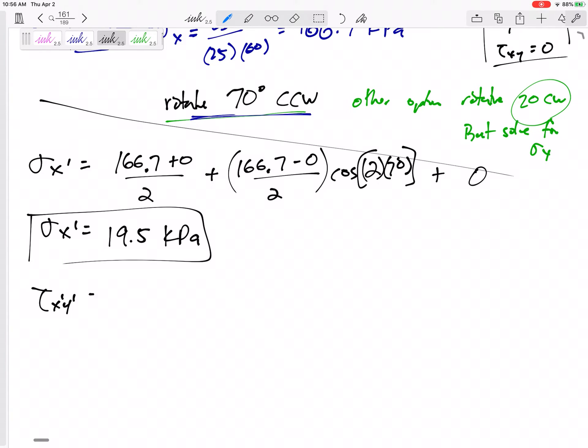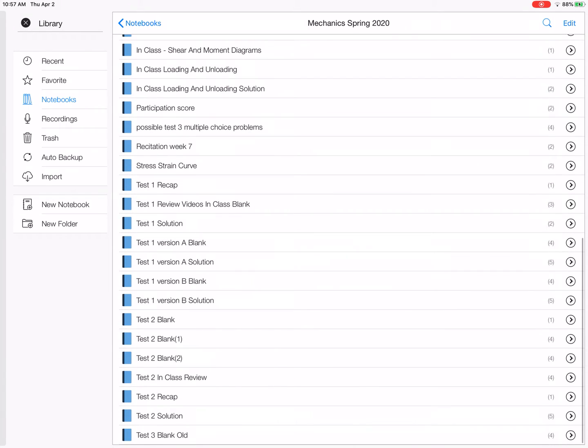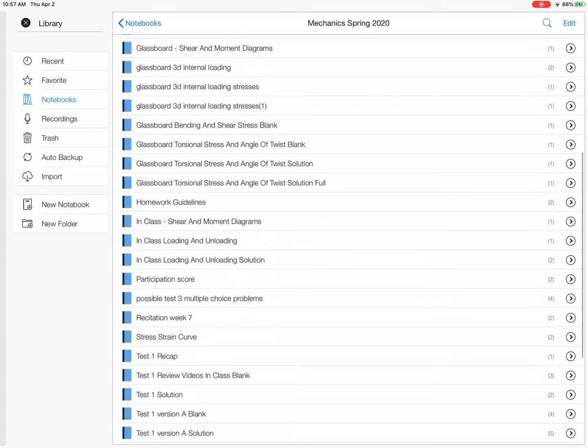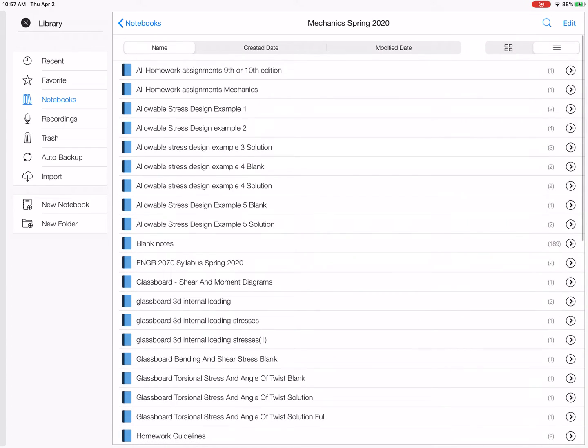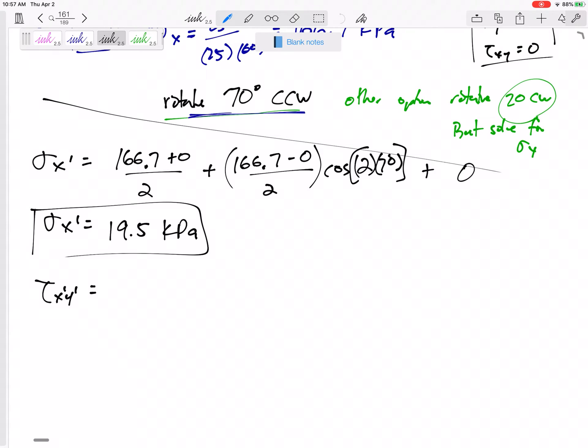Now my new tau X prime Y prime. Go back and look at that formula. I think I've got the formula sheet somewhere here. No, maybe I don't. It's test 2 or test 3 formula sheet. Sorry, I don't. Let me go back to the notes.